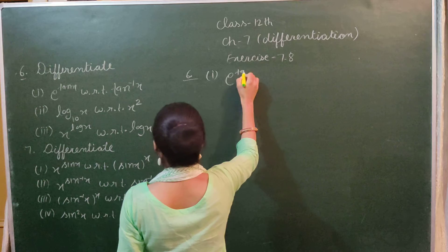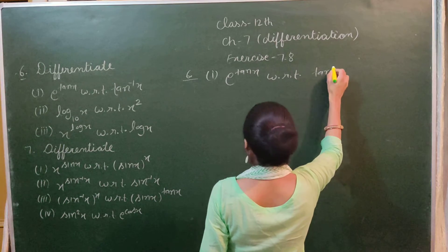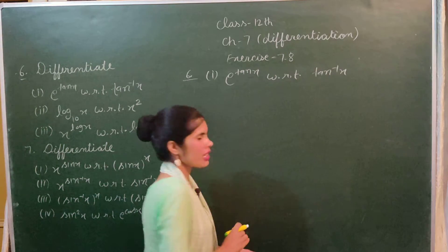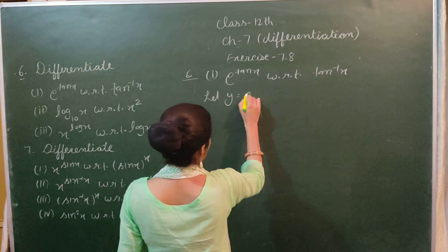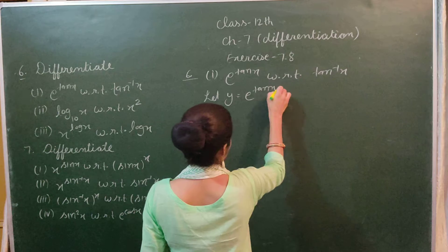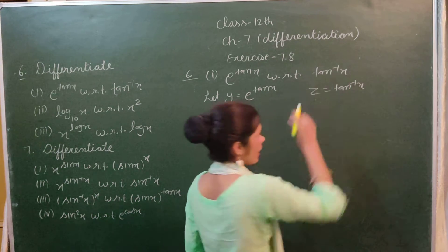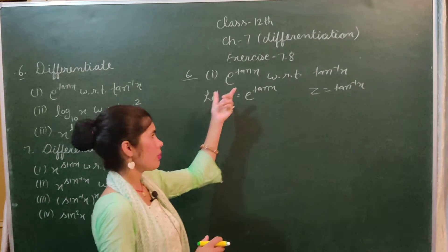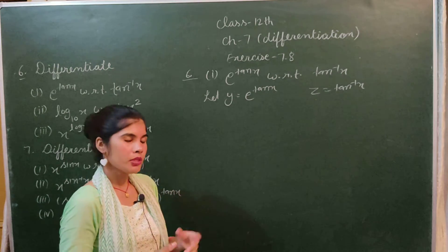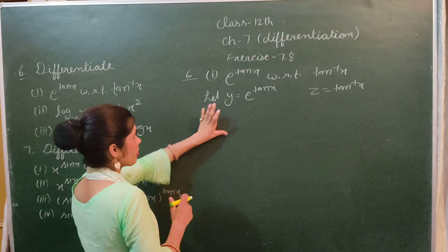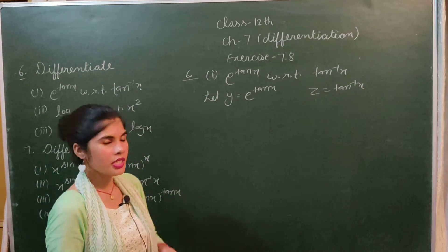In the sixth sum, part one, we have to differentiate e^(tan x) with respect to tan inverse x. We let y = e^(10x) and z = tan inverse x. In this sum we have mainly 3 to 4 steps that we have to solve and remember.